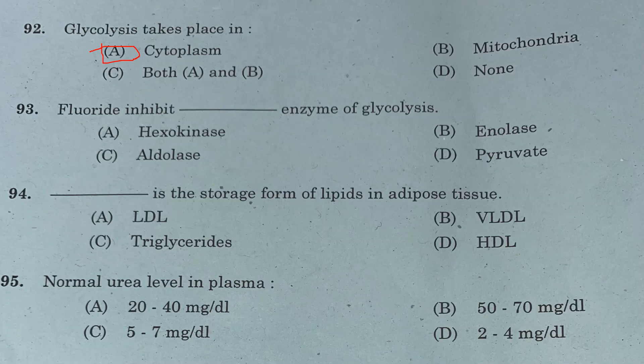Question 93: Fluoride inhibits which enzyme of glycolysis? Option A: hexokinase. Option B: enolase. Option C: aldolase. Option D: pyruvate kinase. Answer is Option B, enolase.